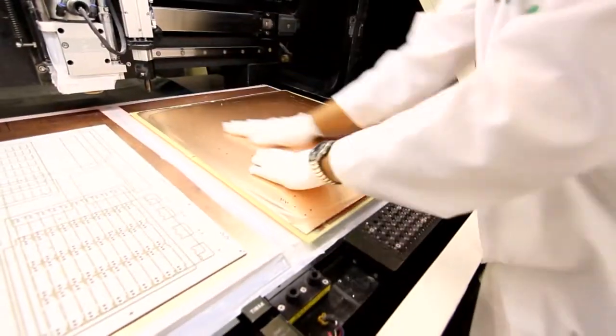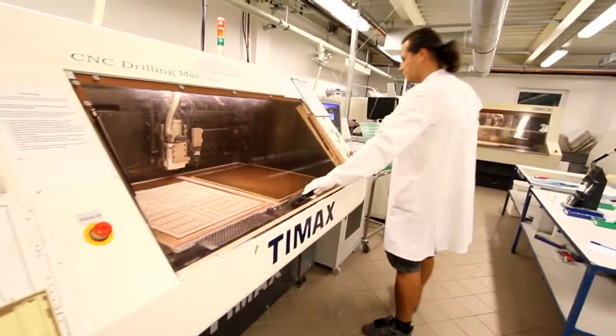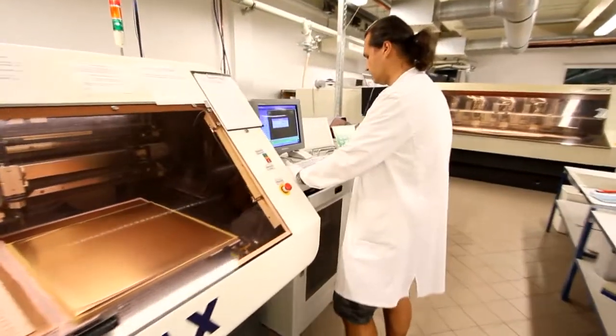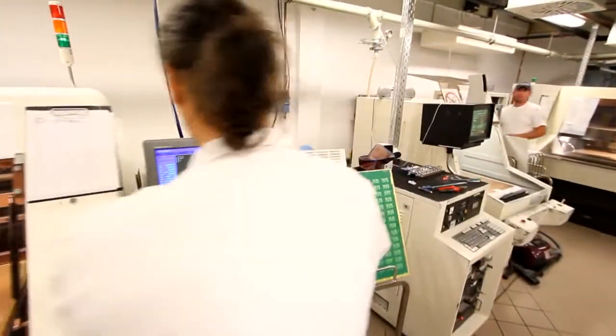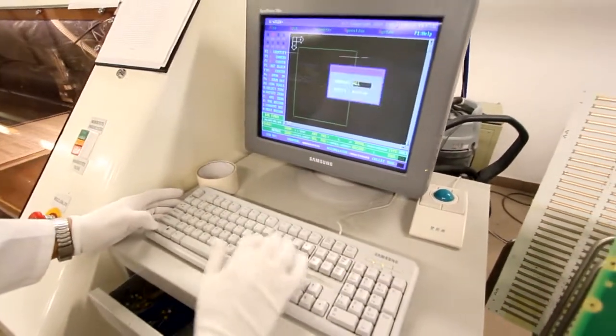The operator loads the panel onto the bed of the machine and selects the correct program with the XY coordinates of the path for the cutter to follow. The drilling machine uses the points of the drill, but the profiling machine uses the specially patterned shank.